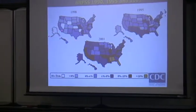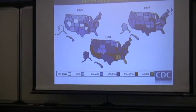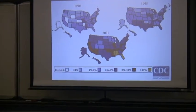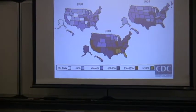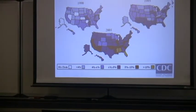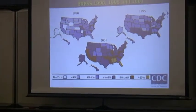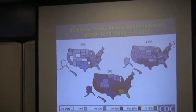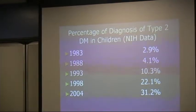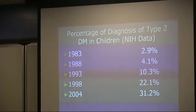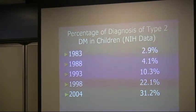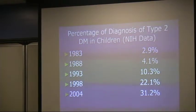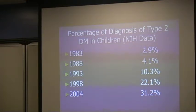A well-known summary of diabetes trends from 1990 to 1995 to 2001 shows features of an epidemic, with a continuous increase in diabetes in basically every single state. Data on the percentage of type 2 diabetes in children shows an increase from 2.9 percent in 1983 up to 31.2 percent in 2004 — an additional feature of an epidemic.